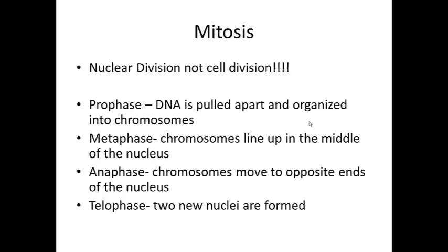Mitosis is nuclear division, not cell division. Here's an overview: prophase — DNA is organized into chromosomes; metaphase — chromosomes line up in the middle of the nucleus; anaphase — chromosomes move to opposite ends; telophase — two new nuclei are formed. Then cytokinesis occurs, where the cytoplasm splits and a new cell membrane forms around each cell, producing two complete new cells. Remember PMAT to recall the phases of mitosis.